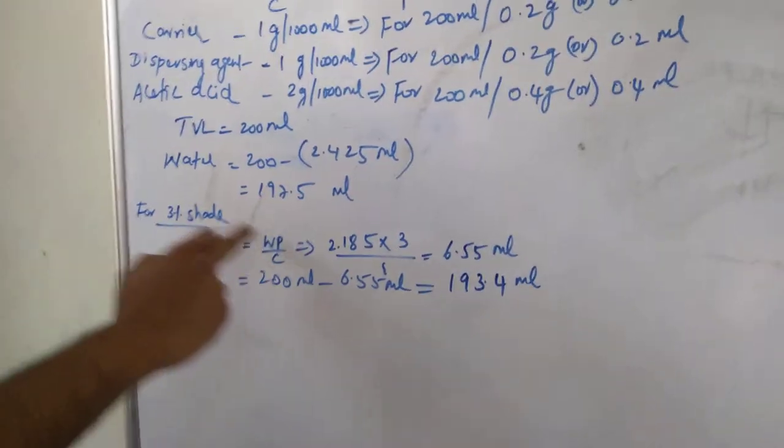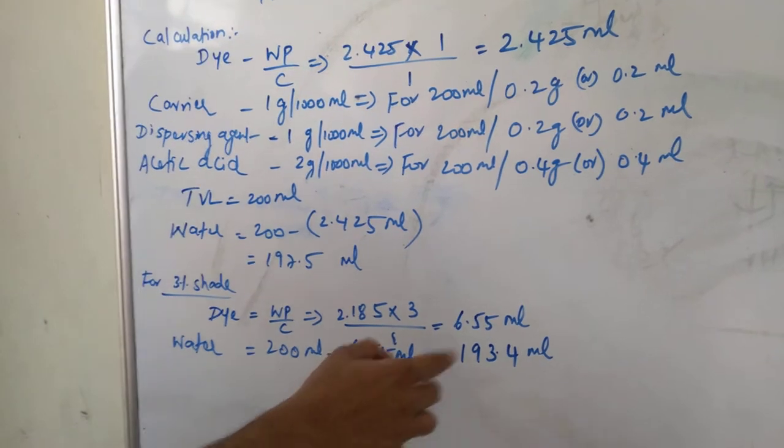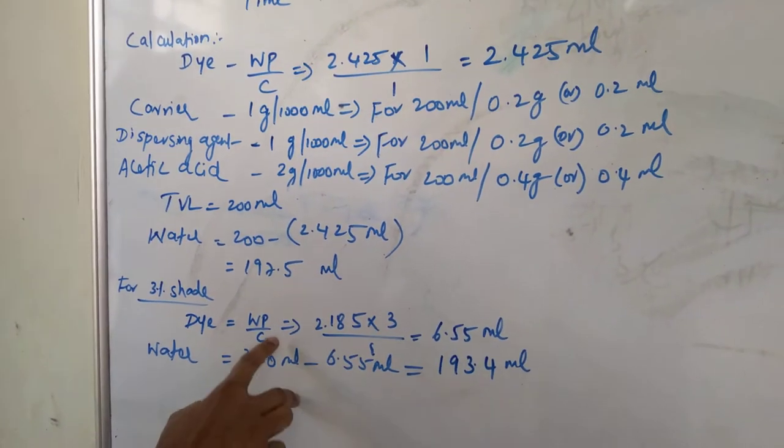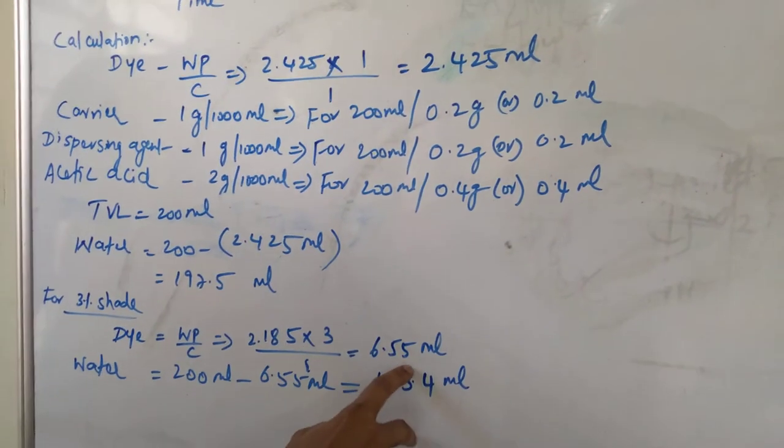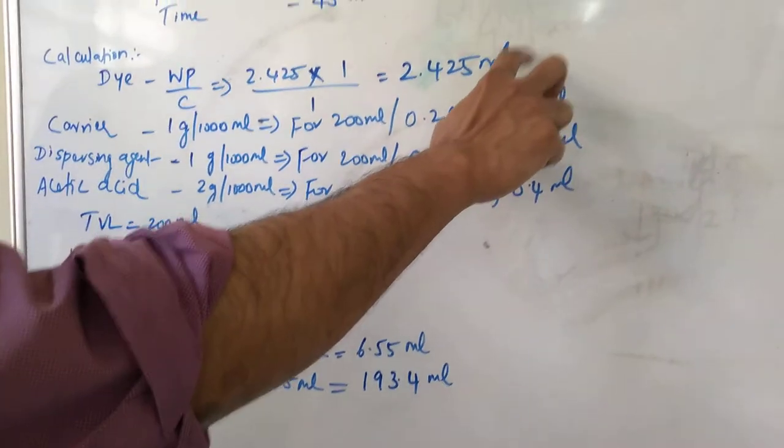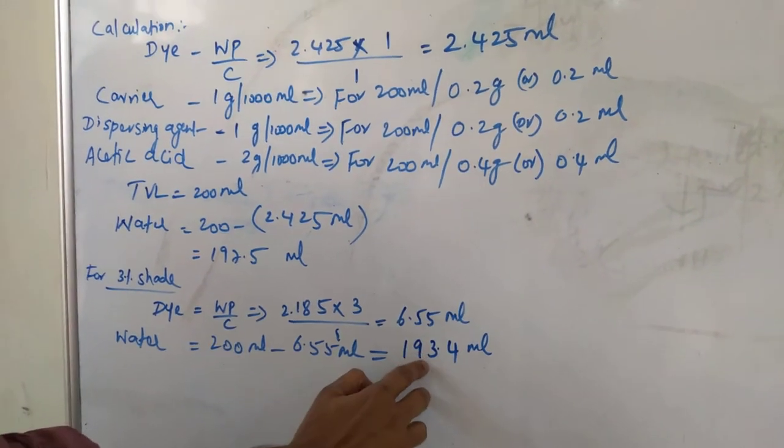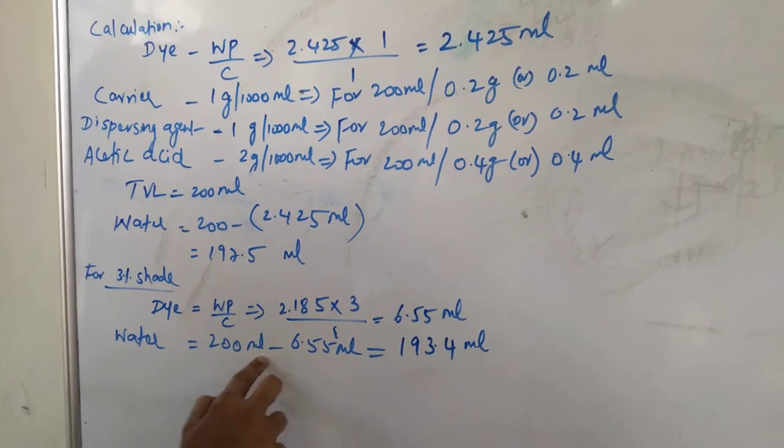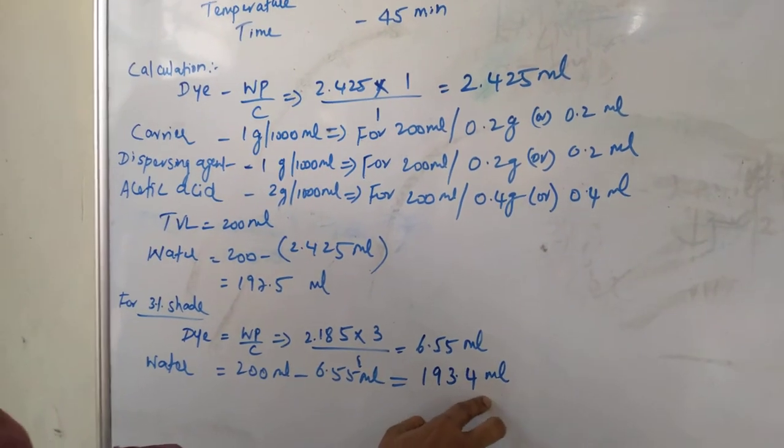But for 3 percent shade, calculation is same, only thing is in numerator, in the WP by C, I am using 3. So it is 6.5 ml, you can see 3 times of this 1 percent. And water is, you subtract from the total volume of liquor, from the dye solution, you get 193.4 ml.